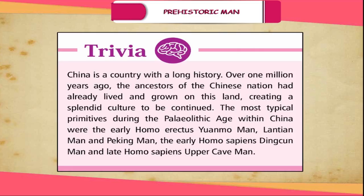Trivia: China is a country with a long history. Over 1 million years ago, the ancestors of the Chinese nation had already lived and grown on this land, creating a splendid culture. The most typical primitives during the Paleolithic age within China were the early Homo erectus — Yuanmou man, Lantian man and Peking man — the early Homo sapiens, Dingcun man, and late Homo sapiens, the upper cave man.